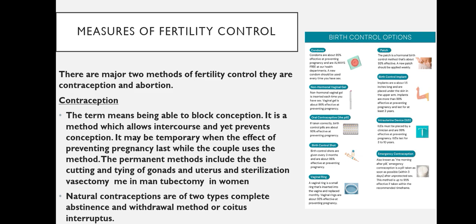Contraception can be temporary, when the effect of preventing pregnancy lasts while the couple uses the method. The permanent methods include the cutting and tying of gonads, i.e., vasectomy in the case of males and tubectomy in the case of females.